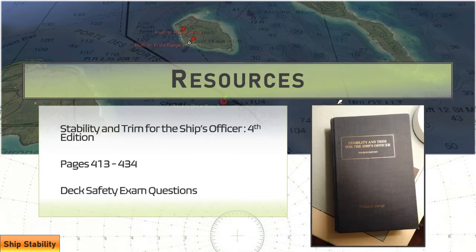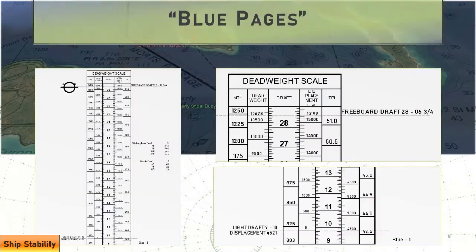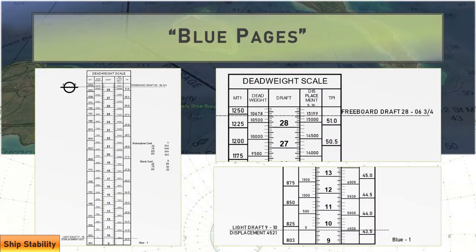Our resources for this video are going to be coming from Stability and Trim for the Ship's Officer, pages 413 to 434, and the questions that we're going to be going through. We're going to look at three different examples that are going to be on the deck safety exam for deck officers, mates and masters and all that.